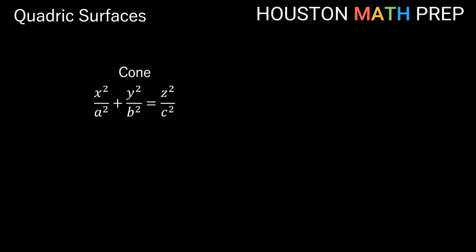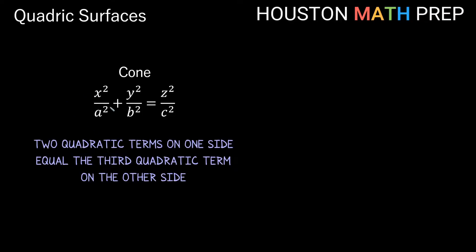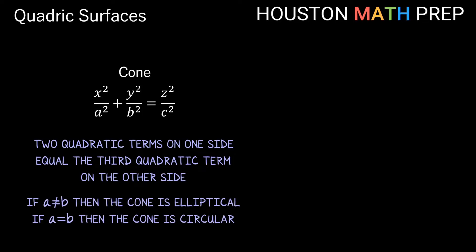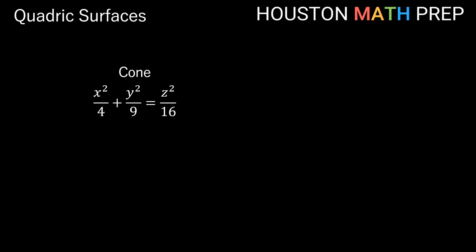Next we'll look at cones as a quadric surface. The equation form of a cone has two quadratic terms on one side and the third quadratic term on the other, with all terms having the same sign. The cone can be circular or elliptical depending on whether the two constants on the same side — a and b — are equal or not. In our example, x²/4 + y²/9 = z²/16, we have different values for a and b.